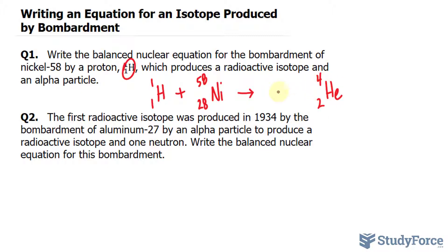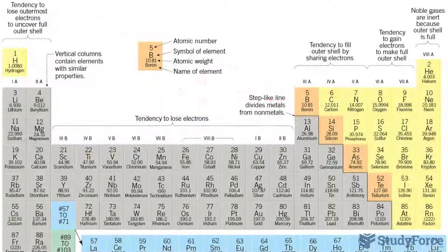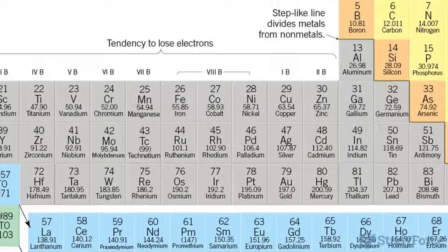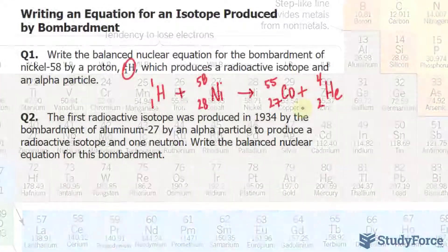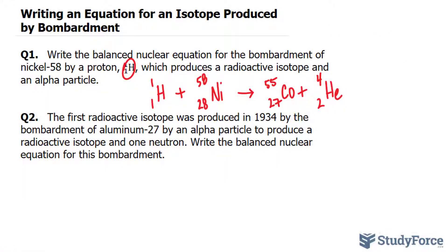So what we have to do is find the symbol or the atom that gets produced and we can subtract. Let's count one plus 28, that's 29. And taking two away from 29, that's 27. Similarly, if we add one plus 58, that's 59. 59 take away four is 55. The 27th element on the periodic table is cobalt and its symbol is Co. So the isotope that's produced is this one right here.